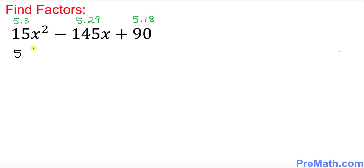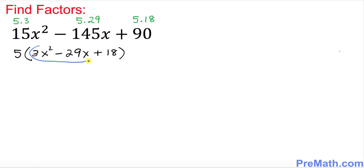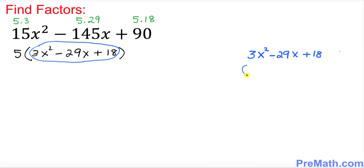So I can move this 5 outside and put inside parentheses: 3x squared minus 29x plus 18. Now we're going to find the factors of this expression.